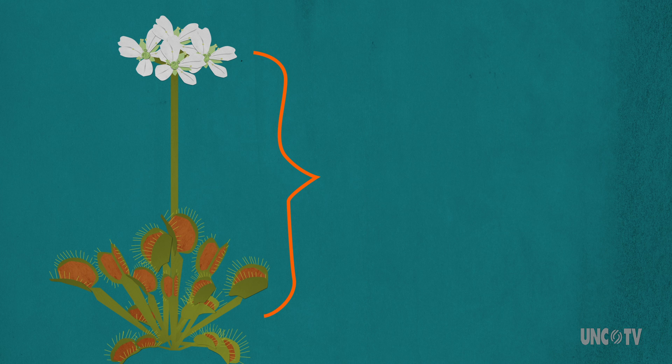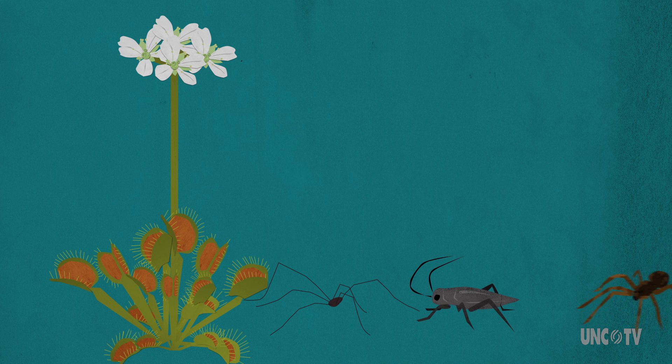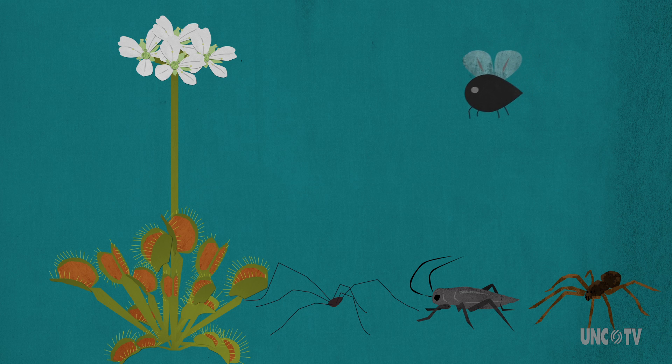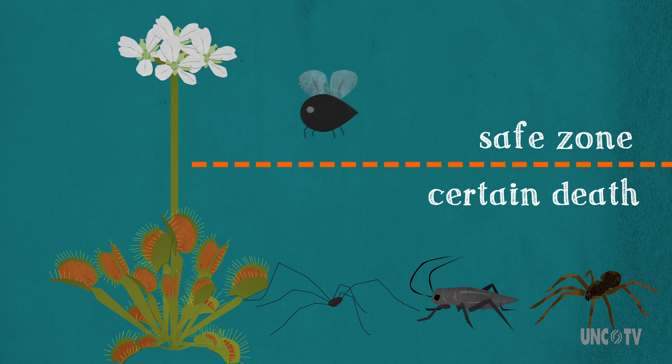First, the flower of the Venus flytrap is located on a stalk far above the trap. And for a plant whose meals include lots of crawling insects, flying pollinators that stay in the higher altitudes have a decent chance of avoiding the trap and pollinating successfully.